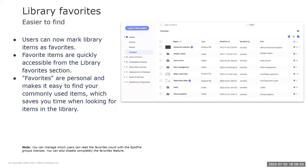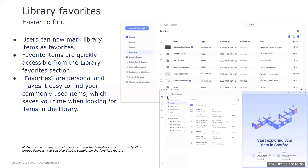With Spotfire 12.5, we have introduced Library Favorites, making it easier to find your most important library items. Library Favorites is available in both the web client and the installed client. You can now mark individual items — for example, files, folders, information links, data connections — as favorites in the Spotfire library. You can add and remove an item as a favorite by clicking the star next to the item, and you can access the favorites in the left panel in both clients. The favorites list is private, only visible to the person that created it.